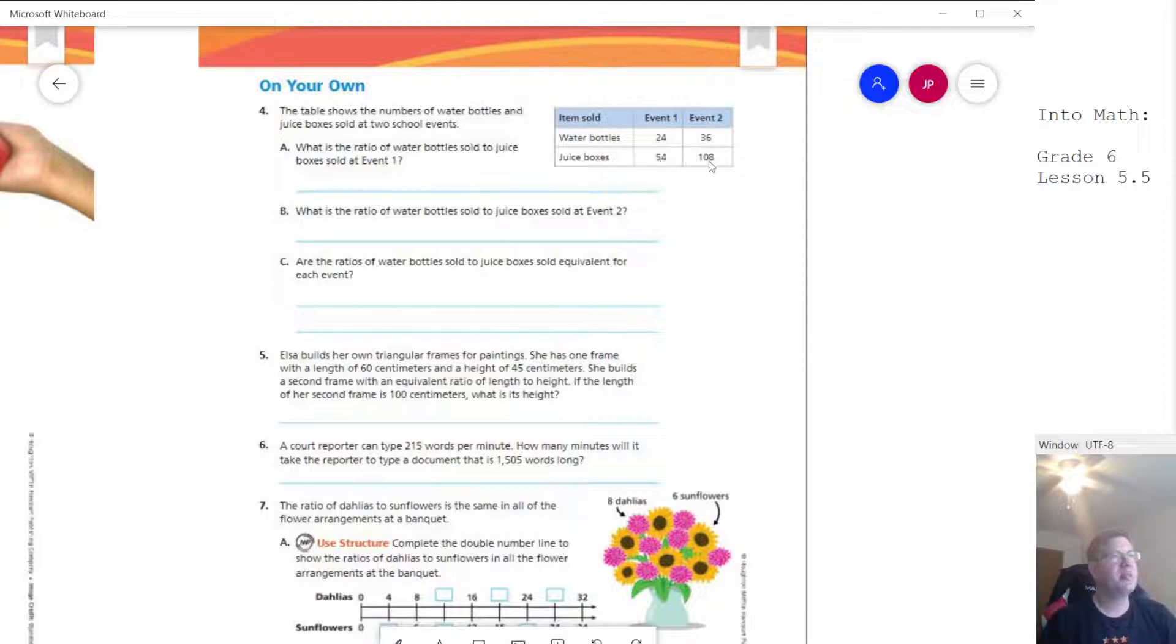For juice boxes, it looked like we doubled our number. And so we didn't quite meet that on going from event one to event two for water bottles. So it doesn't look like they're equivalent for both events.